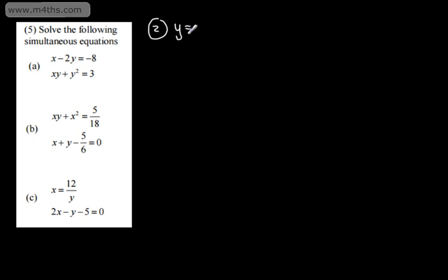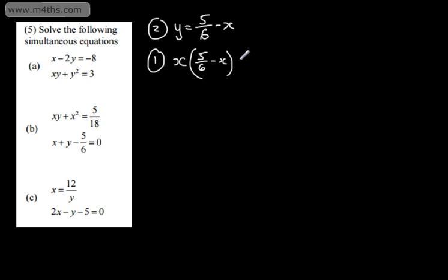Part B. Equation 1 is x multiplied by y plus x squared equals 5 eighteenths, and equation 2 is x plus y minus 5 sixths equals 0. This is linear and this is certainly non-linear. Looking ahead, I'm going to make y the subject. Rearranging equation 2, y is going to be equal to 5 over 6 minus x. I'm going to substitute that into equation 1. So we get x multiplied by 5 over 6 minus x, plus the existing x squared, equals 5 over 18. I've eliminated y by substituting in.